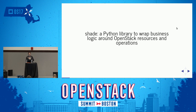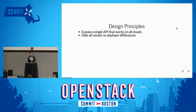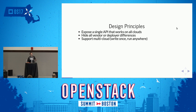So what is Shade? Shade is a Python library. It wraps business logic around OpenStack resources and operations. As a few design principles: it is to expose a single API that works on all clouds. As a cloud user, I find it very frustrating when I have to know deployer choices and have if-conditions in my code so that my code works differently on different clouds. So it hides all of the vendor and deployer differences that it possibly can. It is explicitly written to support multi-cloud — write once, run anywhere, but I'd like to do that better than Java. It does not have plug-ins; there are no Shade plug-ins, and there never will be Shade plug-ins.